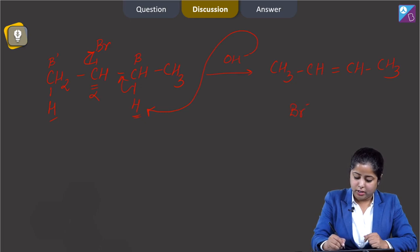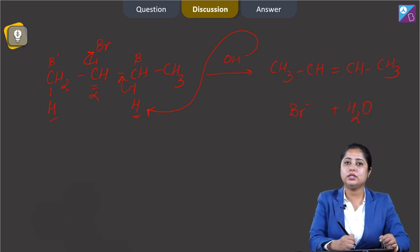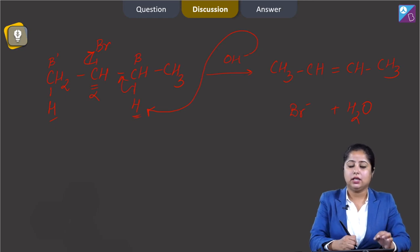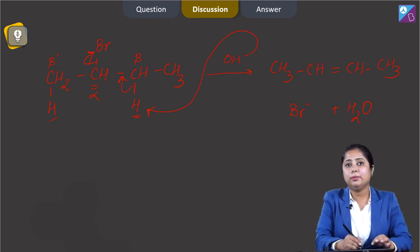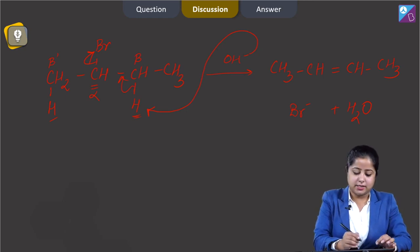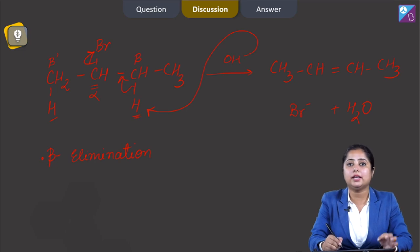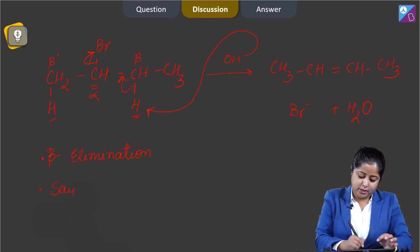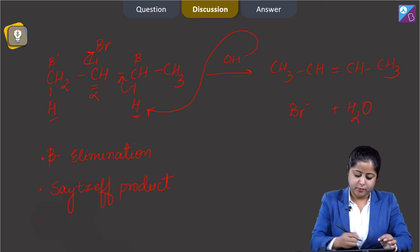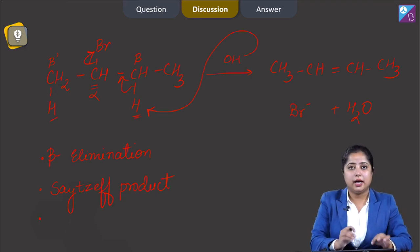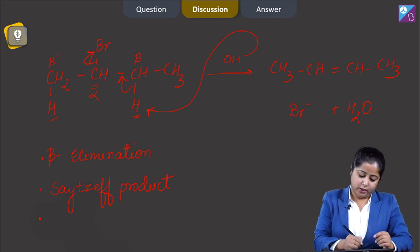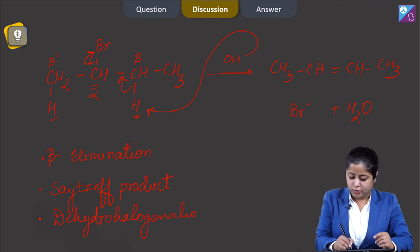Since attack on the hydrogen attached to the beta carbon gives the more substituted alkene, the major product is obtained when OH minus attacks on this hydrogen. Br minus will be eliminated and the product formed will be CH3CH double bond CHCH3, with Br minus and H2O as side products. In this reaction, the hydrogen from the beta position to the halogen atom has been eliminated, so we call it beta elimination.